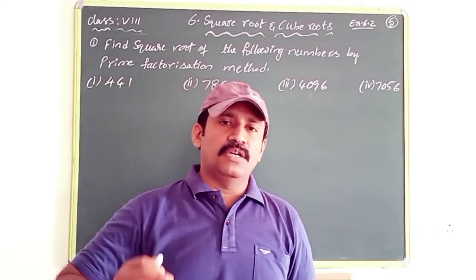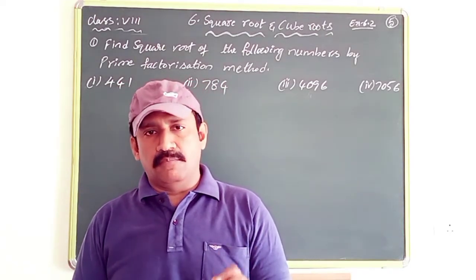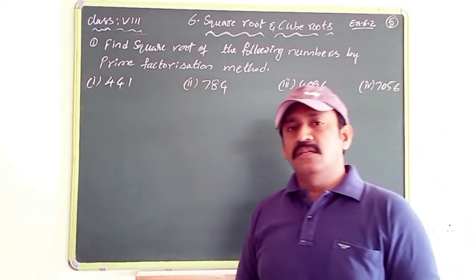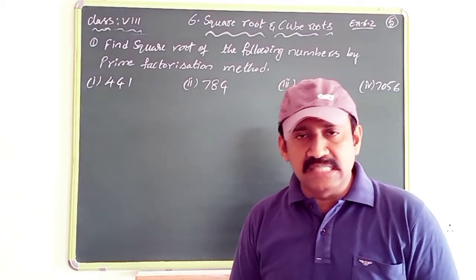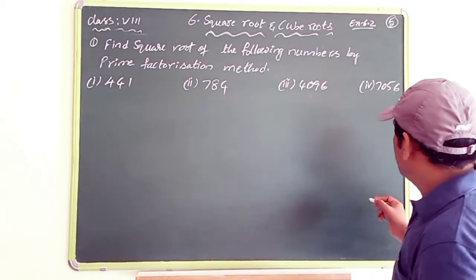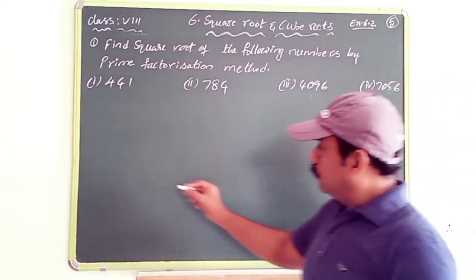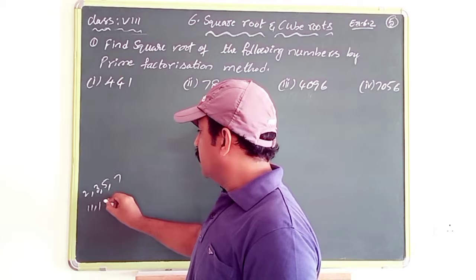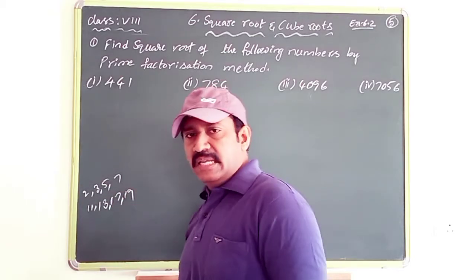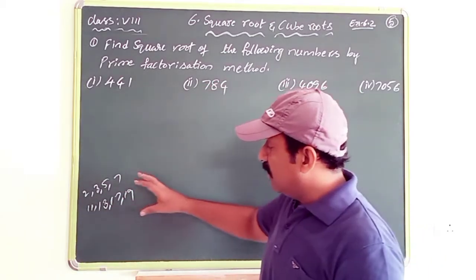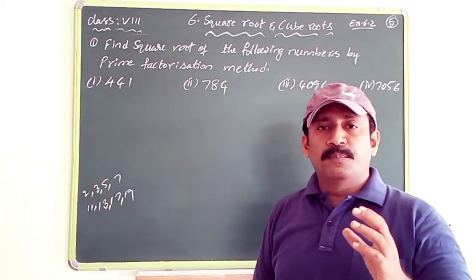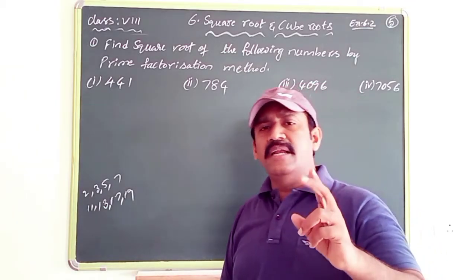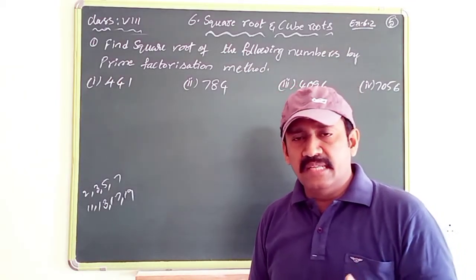Before going to solve, you must know what a prime number is. Prime numbers are numbers which can be divisible by only 1 and itself. The prime numbers are: 2, 3, 5, 7, 11, 13, 17, 19, and so on. These numbers are divisible only by 1 and themselves — they cannot be divisible by any other number.